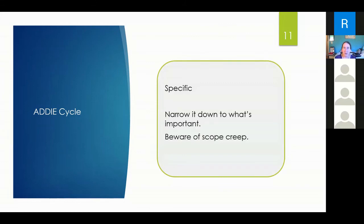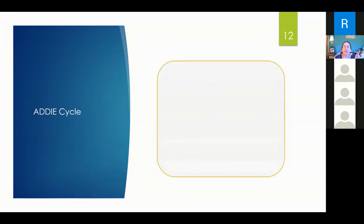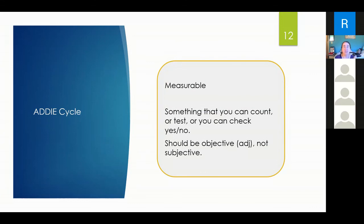Specific: when you're working out a goal, narrow it down to what is important. Beware of scope creep — when you start with one thing, it can easily balloon to another and another. Sophie wanted to share everything out of her Commedia class, and she managed to chop it down to enough pieces for three separate classes. Don't say 'I want it to be 20% cooler' — that's a fuzzy goal. Second, it should be measurable — something you can check off and say yes or no. Did they do it or not? It should be objective rather than subjective.